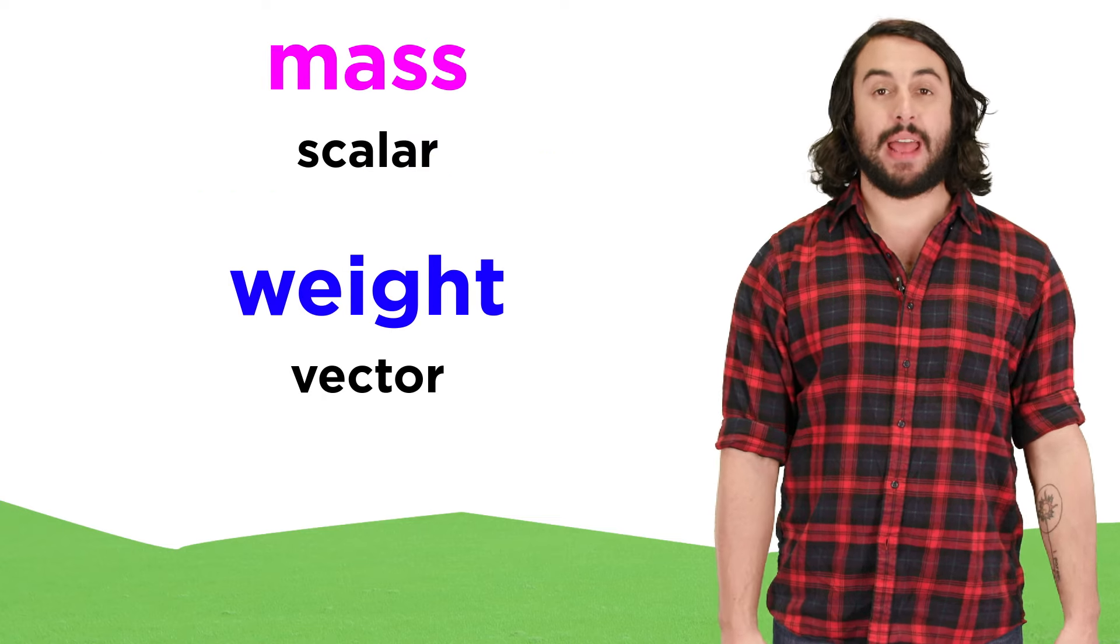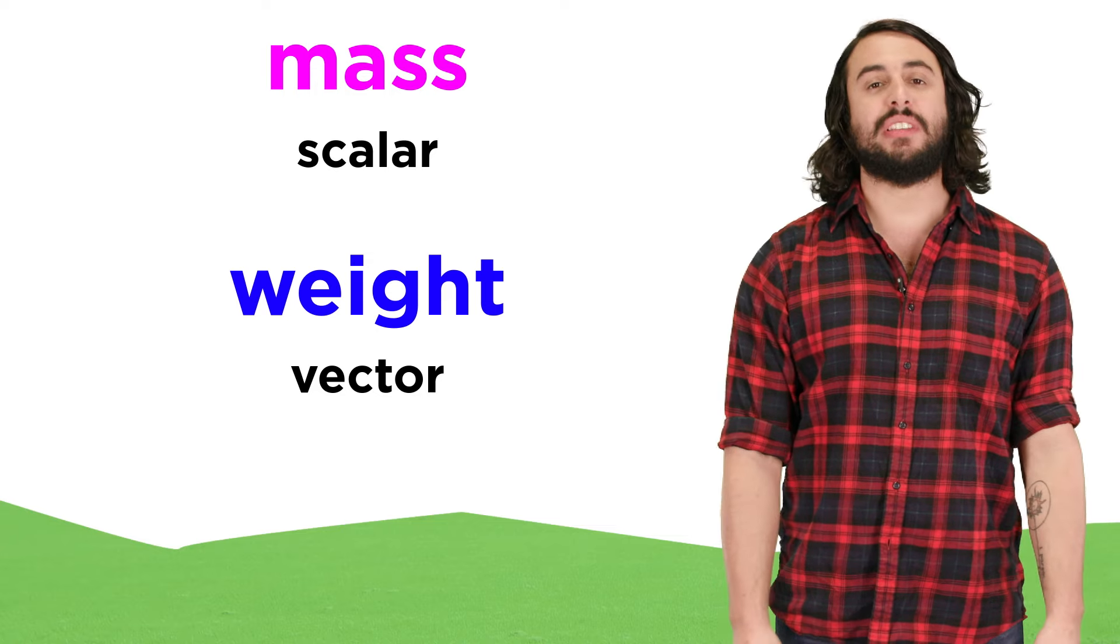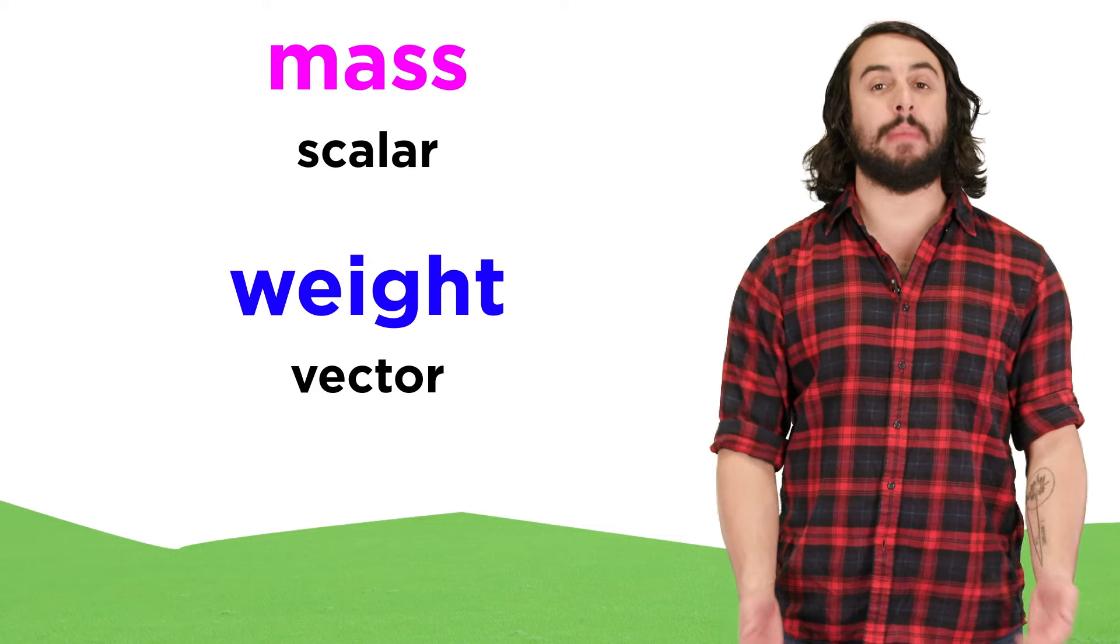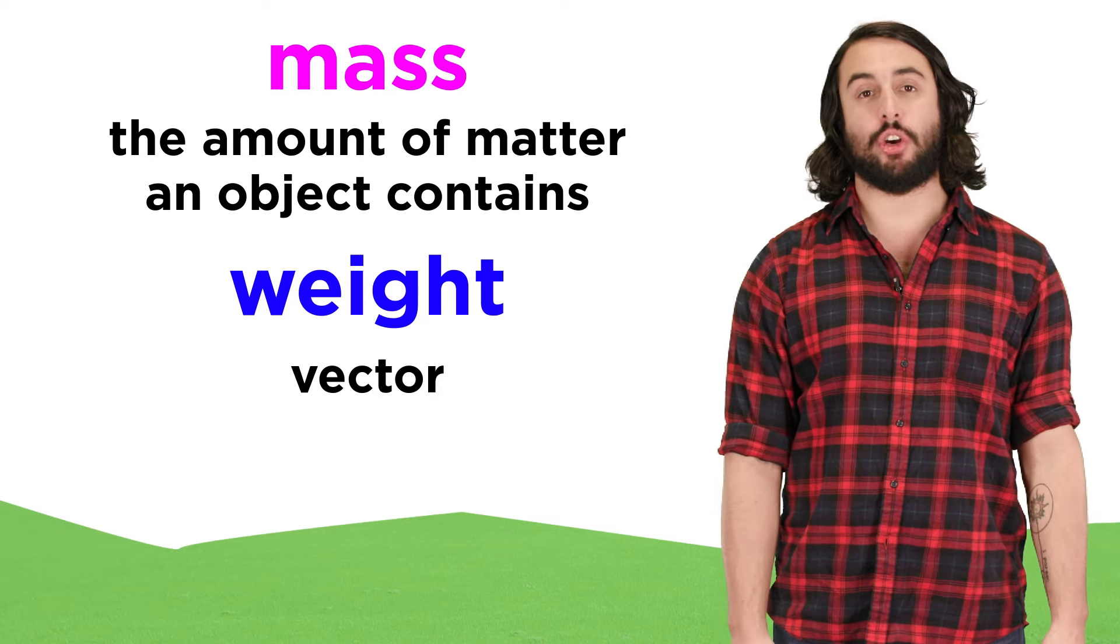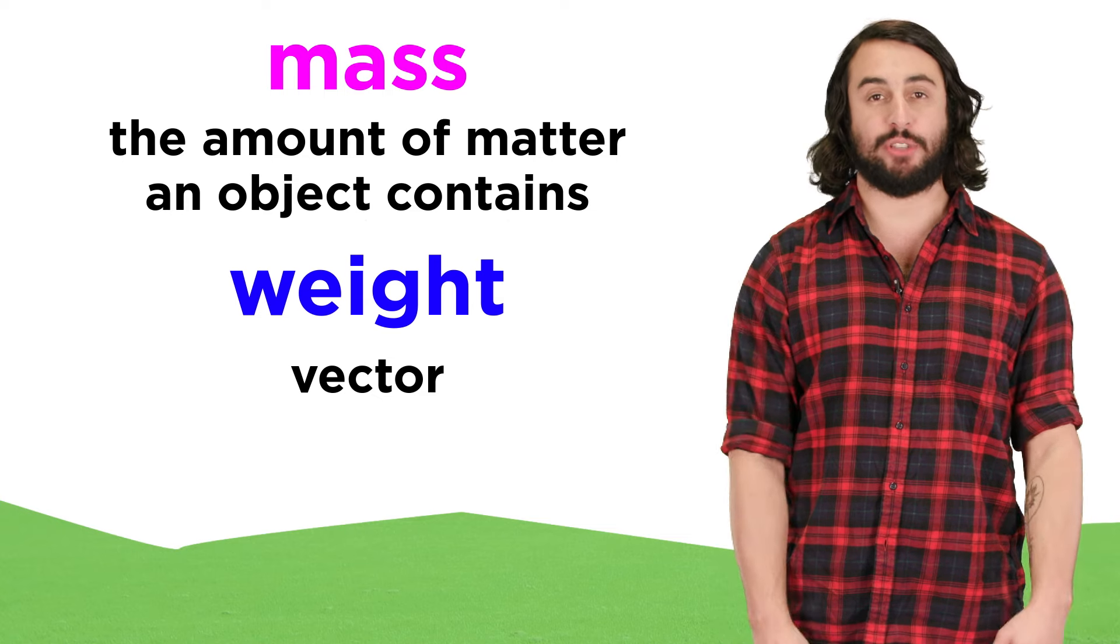To put it simply, mass is a scalar and weight is a vector. This means that mass has only magnitude, since it is a measure of an object's inertia, or essentially how much matter is present within the object.